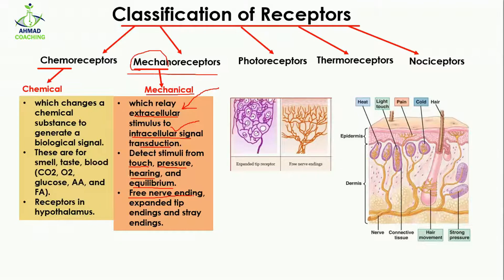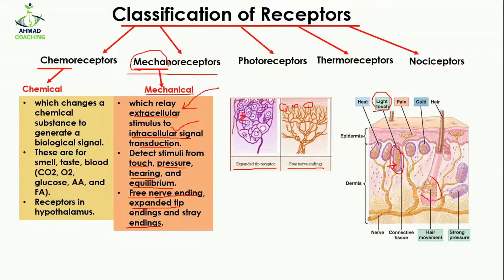In the body, free nerve endings, expanded tip endings, and encapsulated endings are responsible for detecting mechanical changes. Here you can see the free nerve endings — all are separate. The expanded tip receptors are interrelated. Mechanoreceptors for touch are present in the dermis and are encapsulated. Receptors attached to hair detect hair movement, and receptors in the dermis detect strong pressure. So whether your hair is moving or you feel light touch or strong pressure, these receptors can detect that.